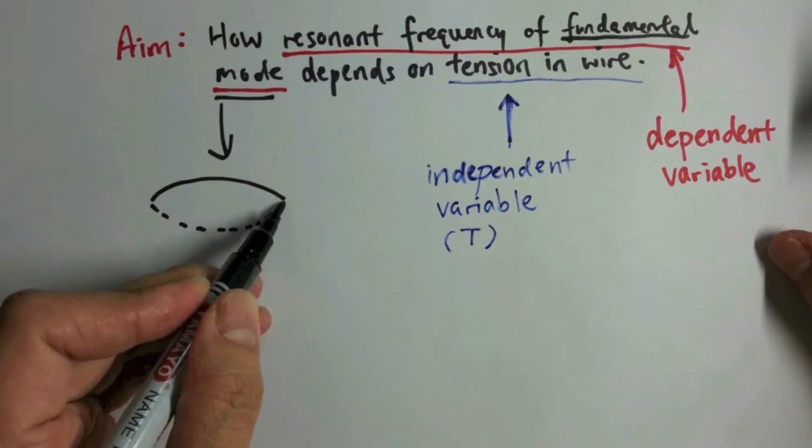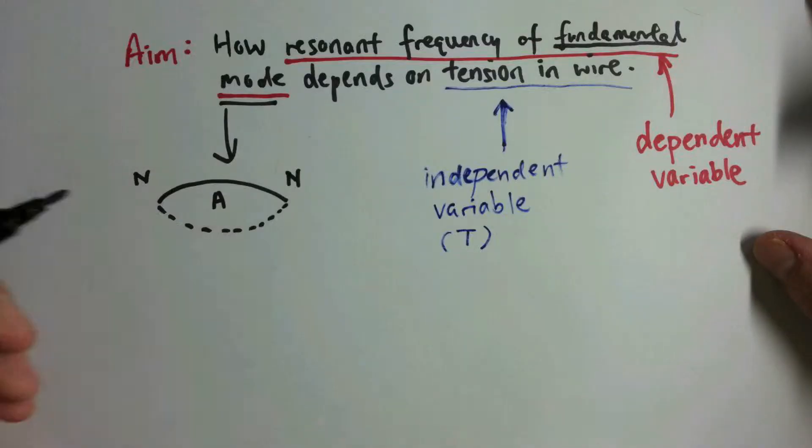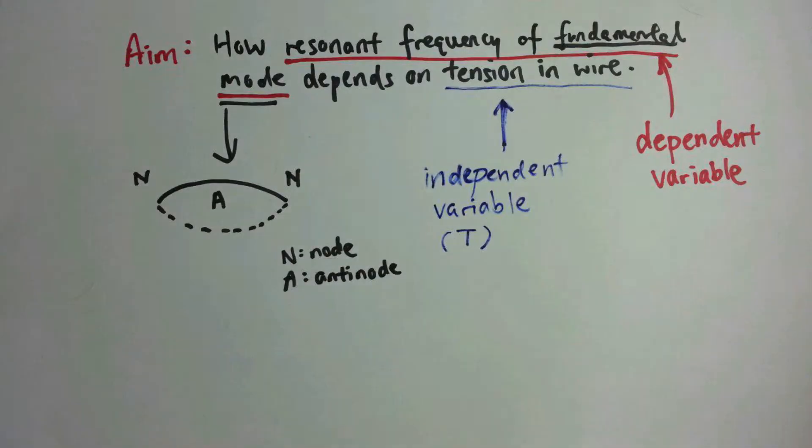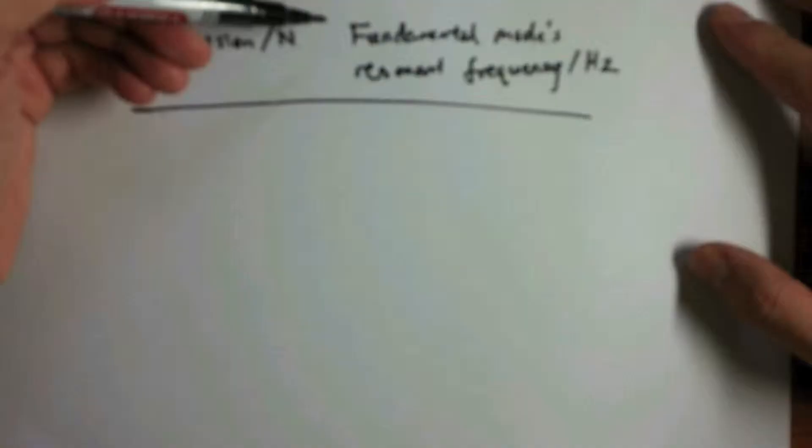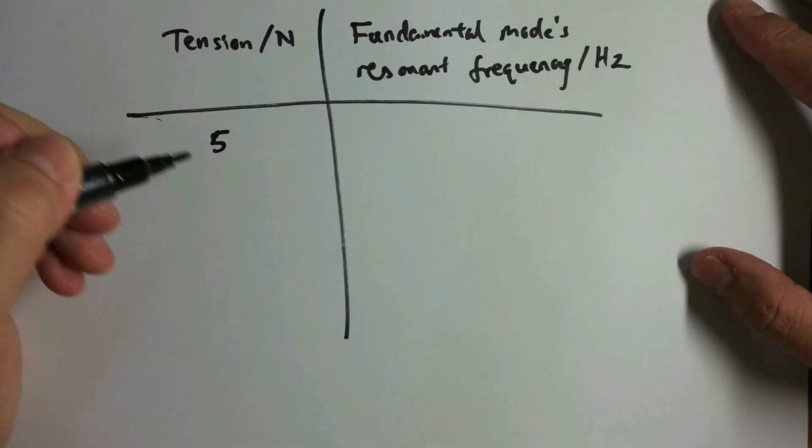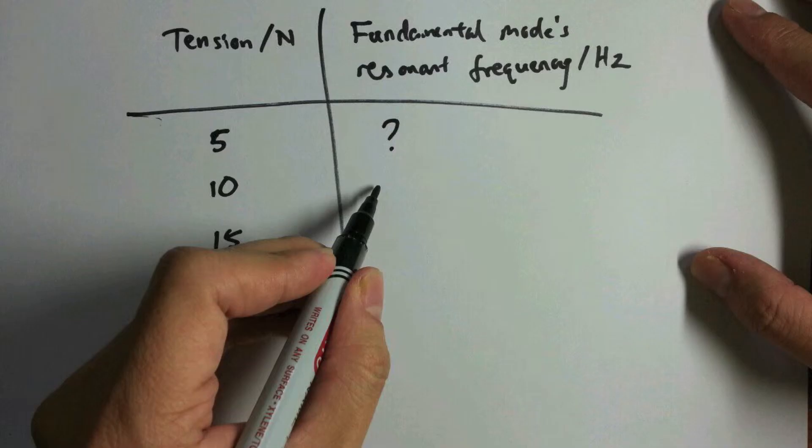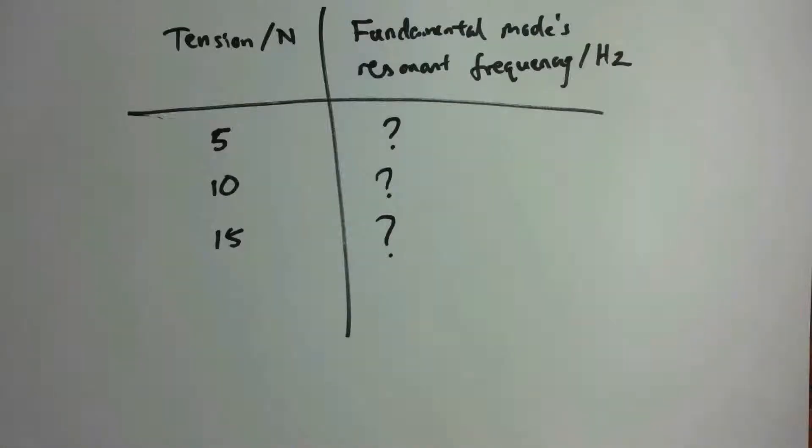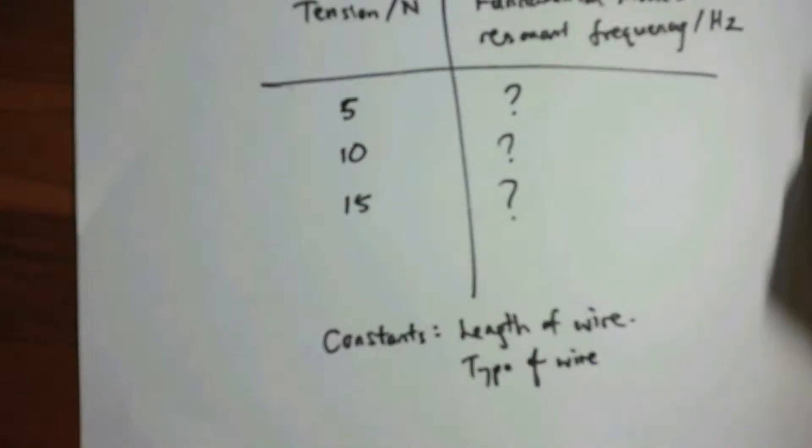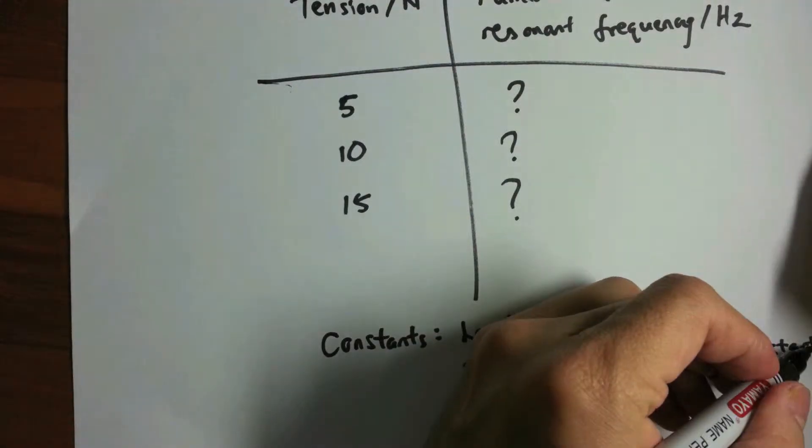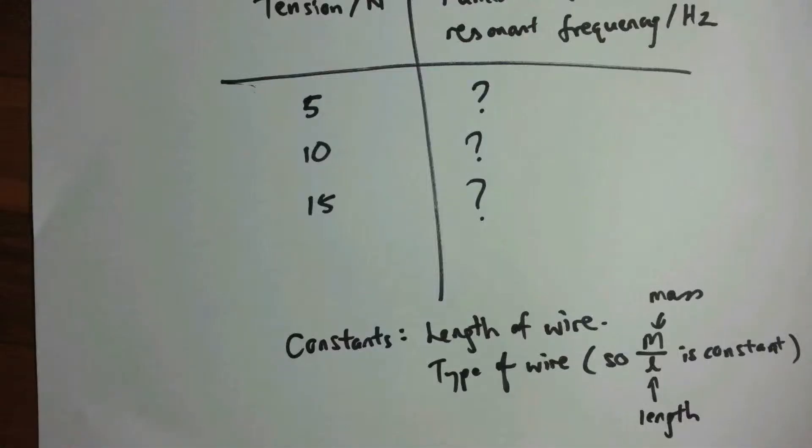The fundamental mode consists of two nodes at each end of the wire and one antinode in the middle. In our experiment, we shall vary tension and measure the resonant frequency of the fundamental mode. The length of the wire between the supports is kept constant throughout the experiment, and we shall use the same wire throughout so that the mass per unit length is kept constant.